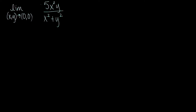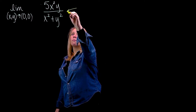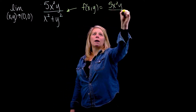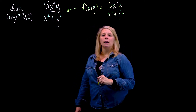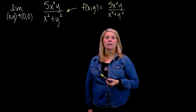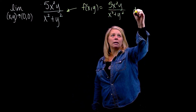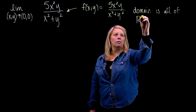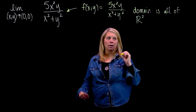We're going to look at another example of a limit of a multivariable function. We'll think about the domain of the function to understand why this limit is something we would look at. The function f(x,y) is 5x²y over x²+y². When thinking about the domain of a fraction, we ask: what makes the denominator zero? The domain is all of R² except points that make the denominator zero — which is just the origin.